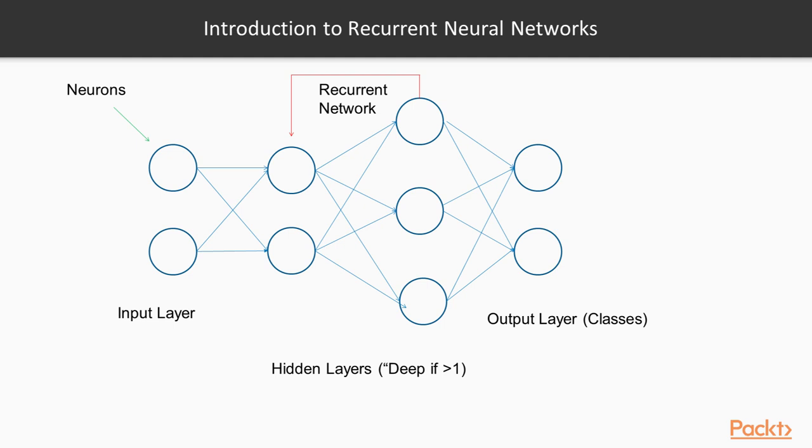A recurrent neural network is a class of artificial neural networks that contains a network-like series of nodes, each with a directed or one-way connection to every other node. These nodes can be classified as either input, output, or hidden, where input nodes receive data from outside the network, hidden nodes modify the input data, and output nodes provide the intended results.